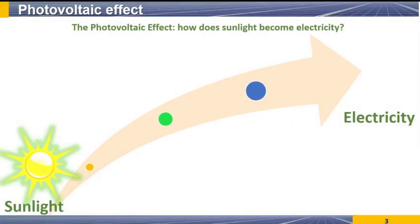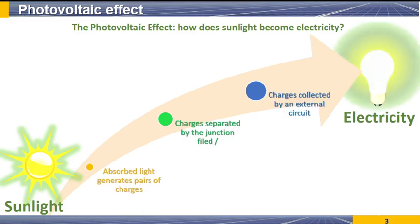To sum up this process to convert sunlight into electricity, we have three main steps. The first one, absorption of sunlight by the semiconductors. Second step, separation of charges or generation of charges, electron holes. And the third is the collection of charges by an external circuit.